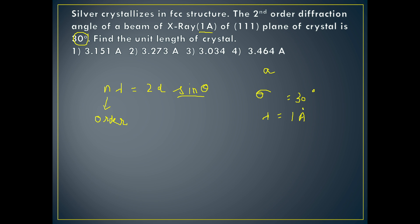Lambda is given as 1 Angstrom, and n is also given — the second order means n is equal to 2. If it's first order then n equals 1, third order n equals 3, and so on — whatever is given in the question, you calculate accordingly.